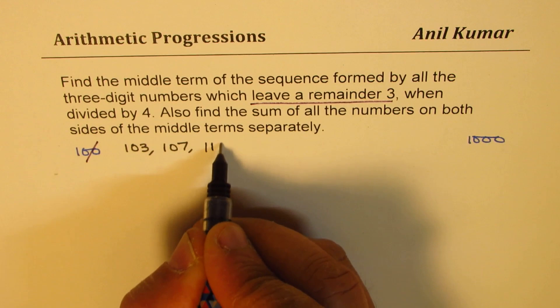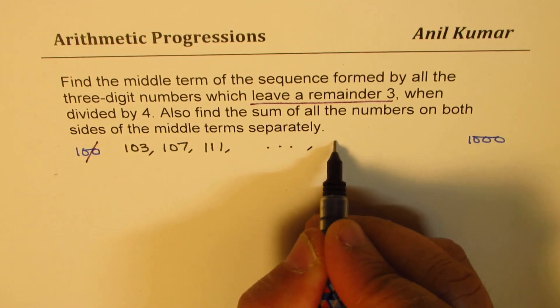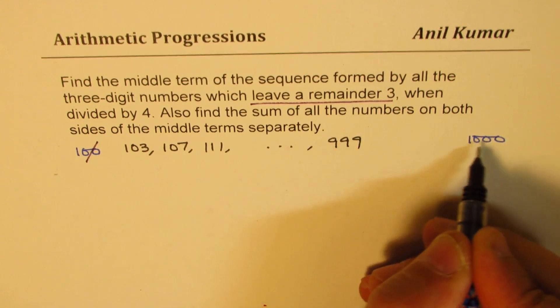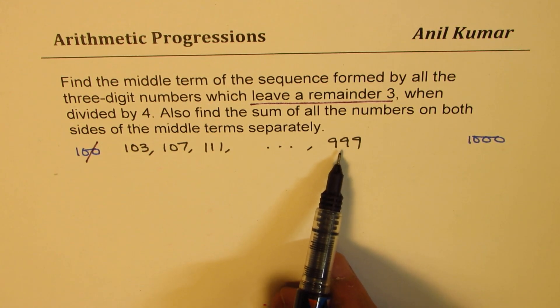The last number will be 999, one less than the multiple of 4. So if the number is one less than multiple of 4, then the remainder is 3. Perfect.